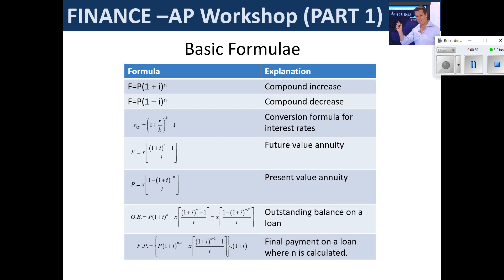With the finance, many of the formulae are exactly the same as what you've seen in core mathematics. Remember that nominal and effective is definitely not given on the formula sheet. The big difference in AP is you sometimes need to convert a nominal rate to a nominal rate — for example, something compounded quarterly to something compounded monthly — not just nominal to effective and vice versa.